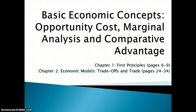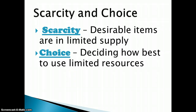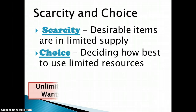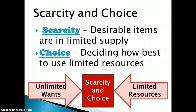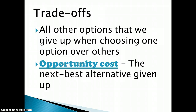Opportunity cost comes out of the concept that we live in a world with scarcity and choice. What we want is limited, but our wants themselves are unlimited. So in a world where we have unlimited wants but limited resources, we have to make a choice because everything that we want doesn't exist. We have to figure out a way to allocate resources to get the most benefit at the least cost. Our whole life is built around trade-offs, and when we have to give up something, that's what we call an opportunity cost.